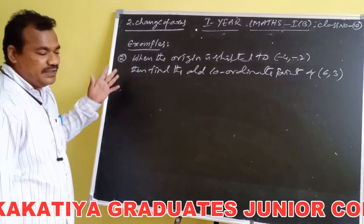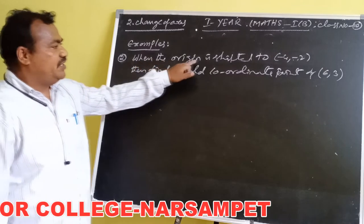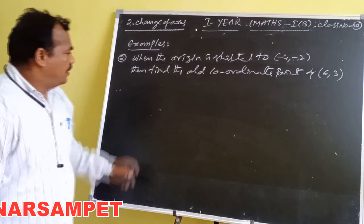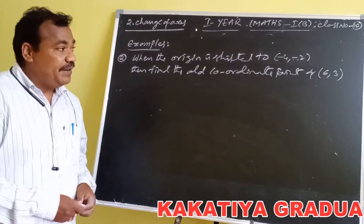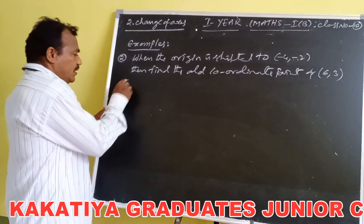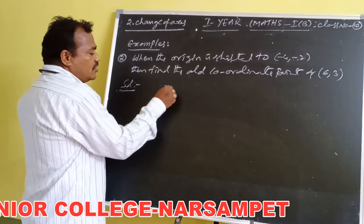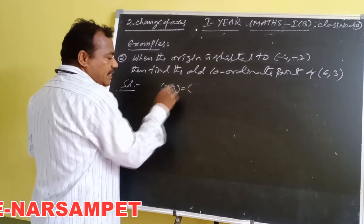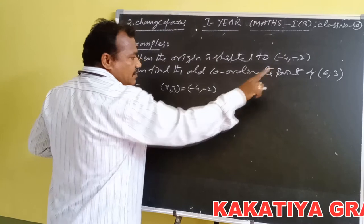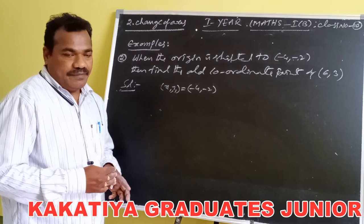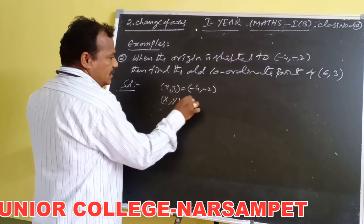This is the second example on transformation of axes. When the origin is shifted to (−4, −2), find the old coordinate point of (6, 3). We consider the shifting point coordinates as x₁ comma y₁, so x₁ equals −4 and y₁ equals −2. The point (6, 3) is in the new system, so capital X comma capital Y equals 6 comma 3.